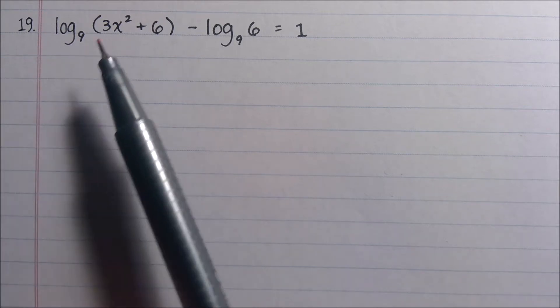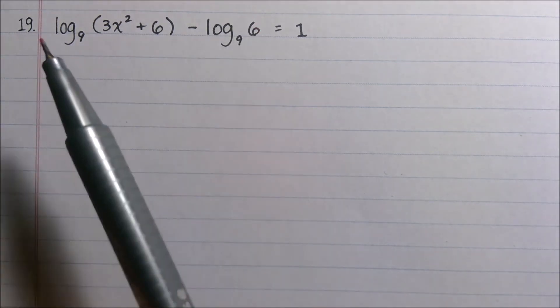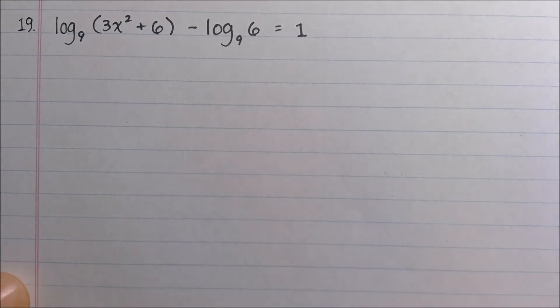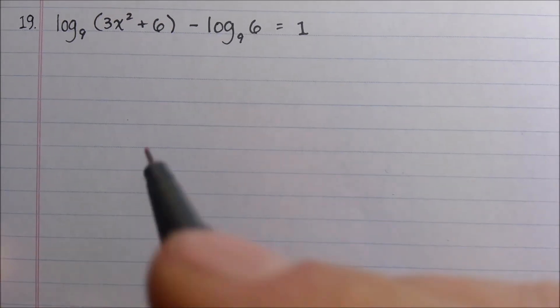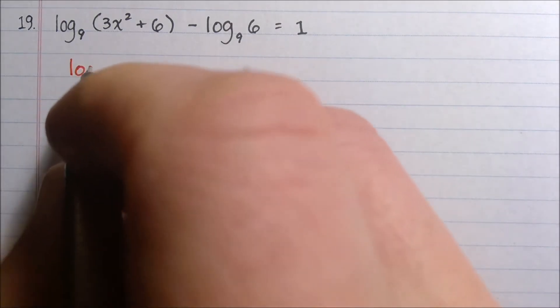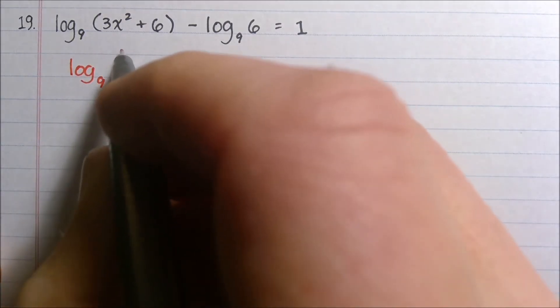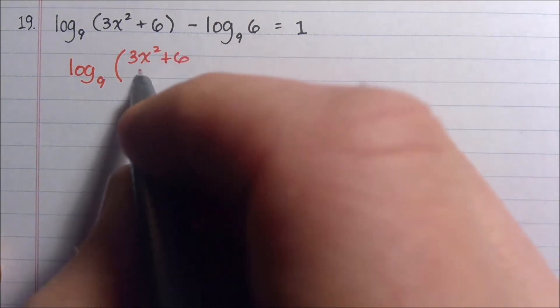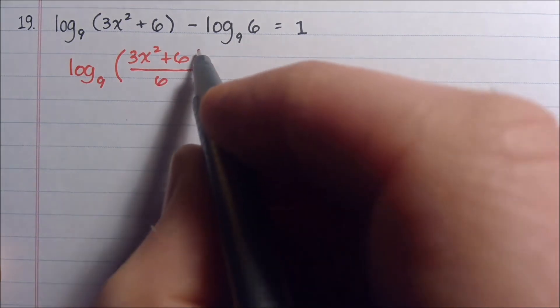So we have a difference of logs, right? Two logs, and we're taking the difference of them. One of the laws of logs says that the difference of logs is the log of their quotient. So we're going to change these two terms into log base 9 of 3x squared plus 6 over 6.